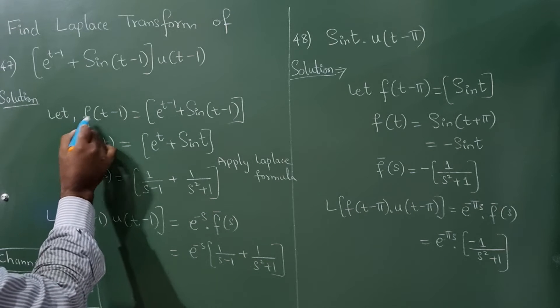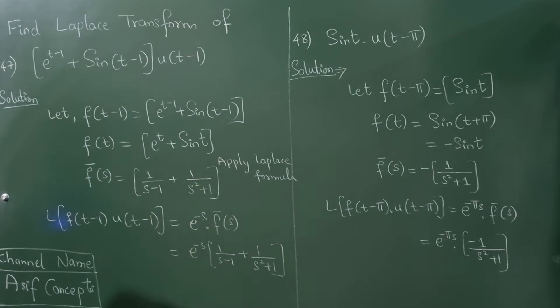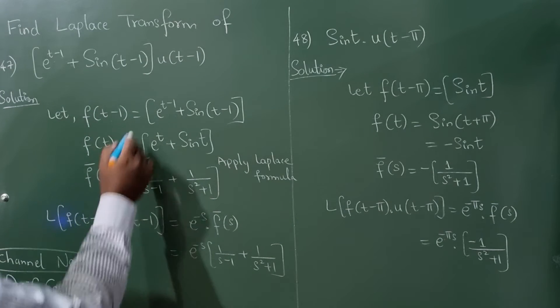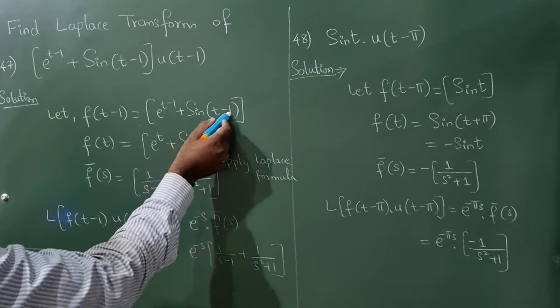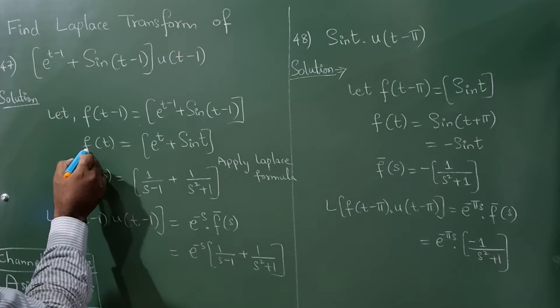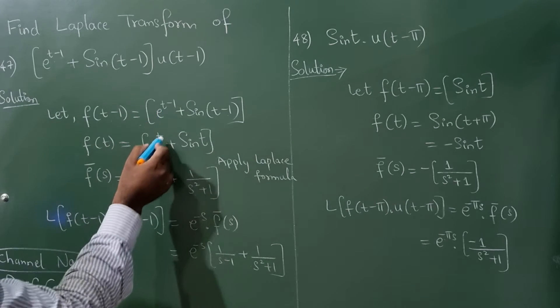So consider f of t minus 1 because there is a t minus 1, t minus 1 and t minus 1 is here. Okay, is equal to, I have written e raise to t minus 1 plus sine t minus 1. Now f of t means where there is a t minus 1 write t.